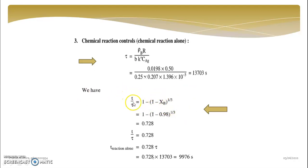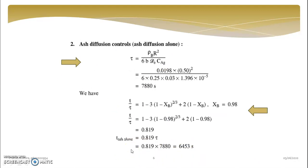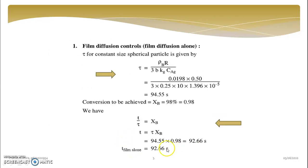And T by tau is equal to 1 minus 1 minus XB raise to 1 by 3. That is the relation between T tau and XB for chemical reaction control. And that is why your final T of reaction alone is 9976. So this is your answer for T of chemical reaction.